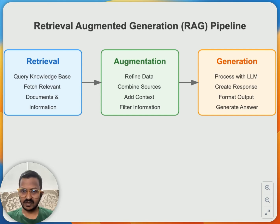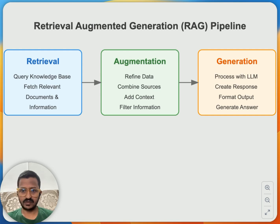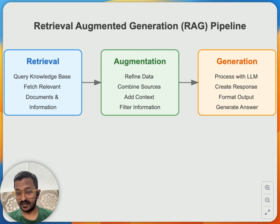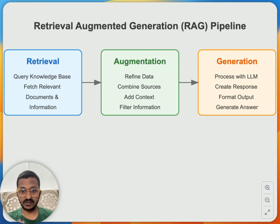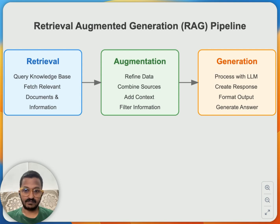Now LLMs are pretty advanced — they have access to tools and web search and can easily get real-time data. But usually, because these LLMs are trained on a large amount of datasets, they have a knowledge cutoff date. Because of that, they sometimes get confused in answering user queries, and that's how they come up with fake answers when they don't know something.